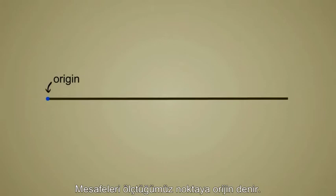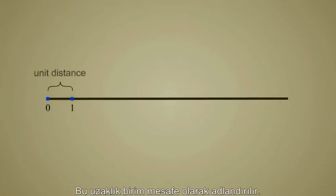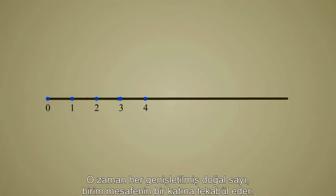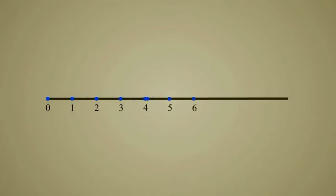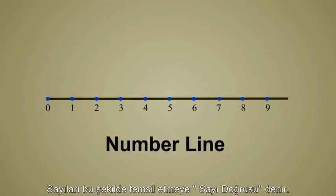The point from which the distances are measured is called the origin. It makes sense to place the number zero at the origin since it represents zero distance from that point. We must now choose some distance for the number one — this distance is called the unit distance. Every whole number then corresponds to a multiple of that unit distance. This way of representing numbers is called a number line.